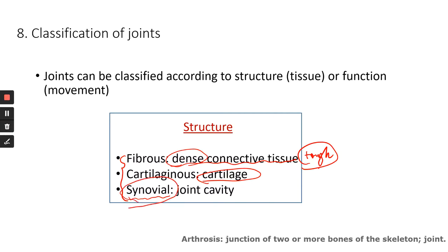In a synovial joint, you have a joint cavity. Arthrosis means the junction of two or more bones of the skeleton — arthrosis just means joint. You'll often hear the word 'articulate,' which means that two or more bones join together to form a joint.